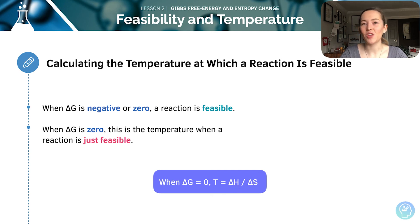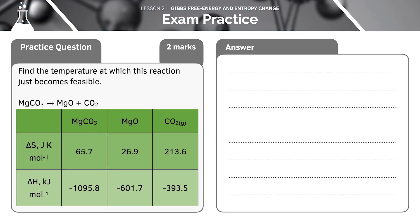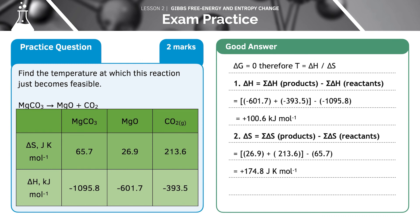Let's do an example question where you can test this out. Don't forget to convert your units from entropy, which will always be in joules, into kilojoules. You're going to have to divide that number by a thousand to convert it into kilojoules.